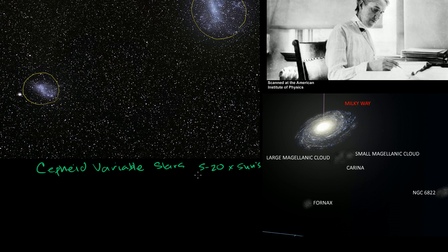But what makes them interesting is, one, they're really bright. So you can see them from really far away. You can see these Cepheid variable stars in other galaxies. In fact, we can see them well beyond even the Small Magellanic Cloud or the Large Magellanic Cloud. You can see these stars in other galaxies.